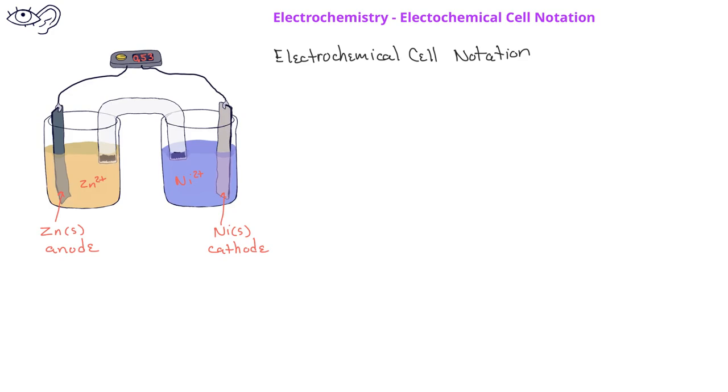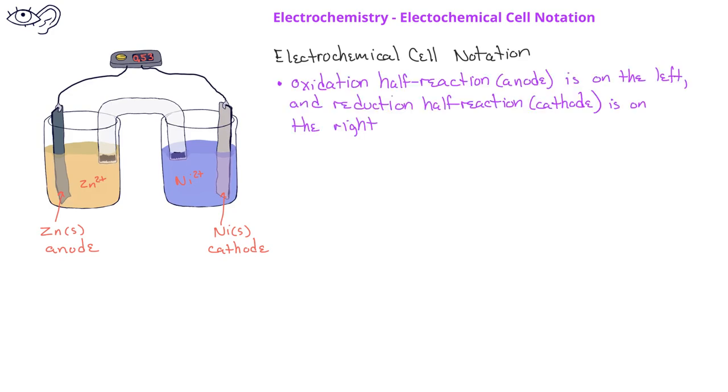the oxidation half-reaction is always on the left of the notation and the reduction half-reaction is always on the right side of the notation. A double vertical line is used to represent a salt bridge that separates the two half-cells.